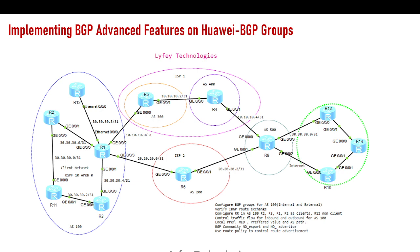Hello everyone, welcome back to Life Technologies channel. Today we are continuing with the highway lab simulation series, demonstrating how to implement different networking technologies on Huawei routing and switching devices. In today's episode we are starting to implement BGP advanced features. BGP is widely used in service provider and enterprise networks because of its features, and you need a good understanding of them if you are managing a network running BGP.